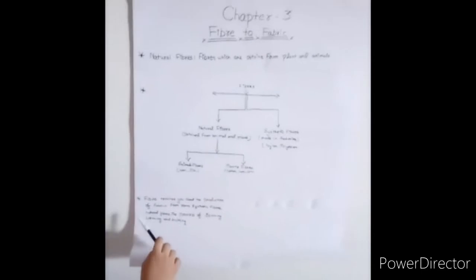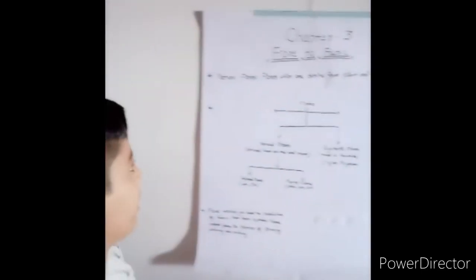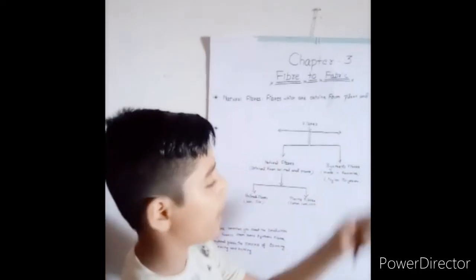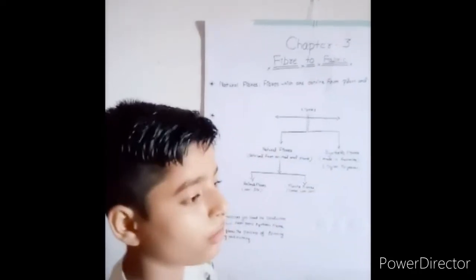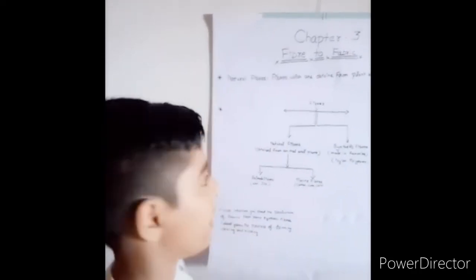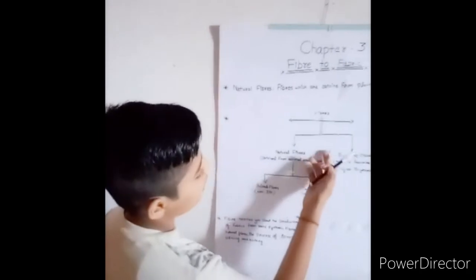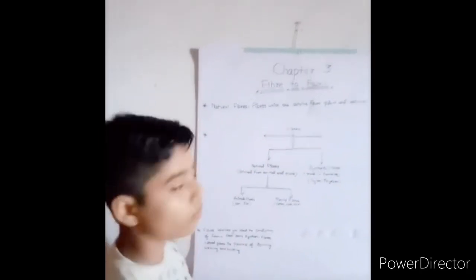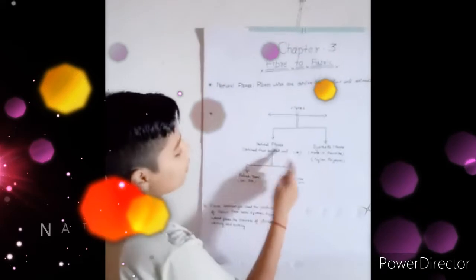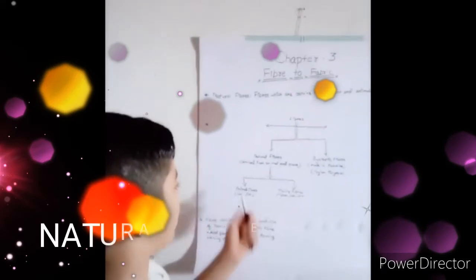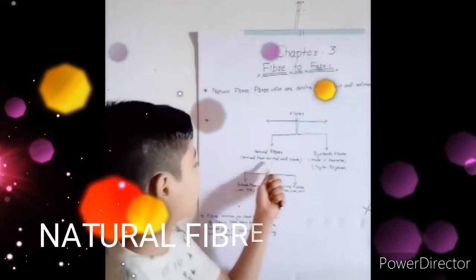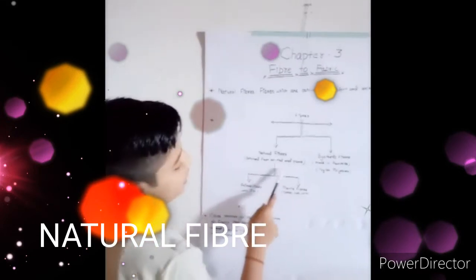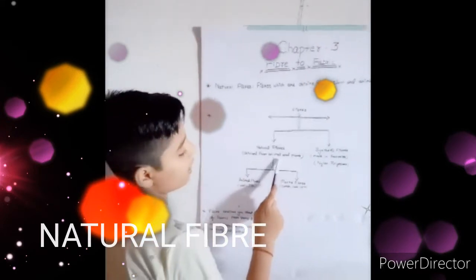We are going to learn about natural fiber. What is natural fiber? Fibers which are obtained from plants and animals — that means it is the fiber that comes from plants and animals. There are two types of fiber: natural fiber and synthetic fiber. Natural fiber is obtained from animals and plants.